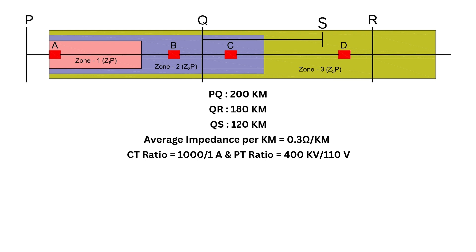Let's calculate the setting for zone 3, which provides backup protection for the longest remote line. Since the line from Q to R is 180 kilometers and it's the longest line from Q, the total length we need to consider is PQ plus QR = 200 + 180, which is 380 kilometers. The impedance becomes 0.3 × 380, which is 114 ohms.